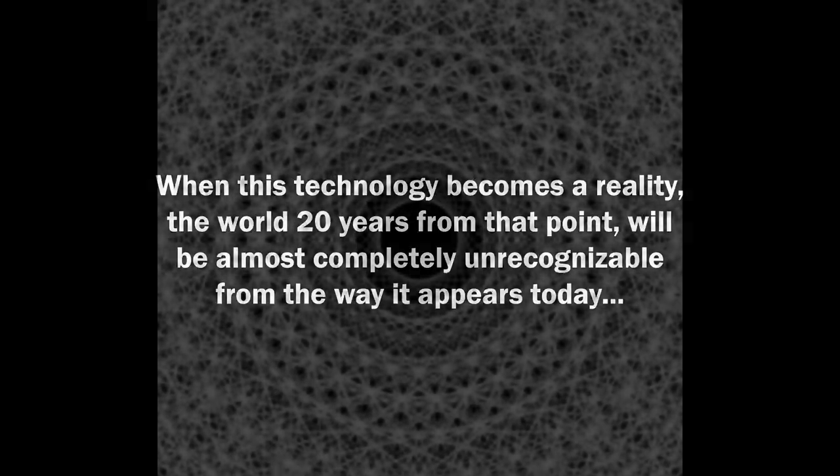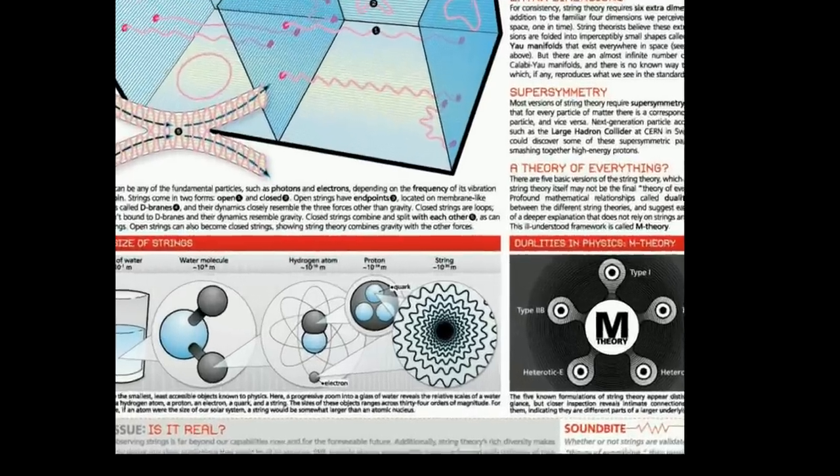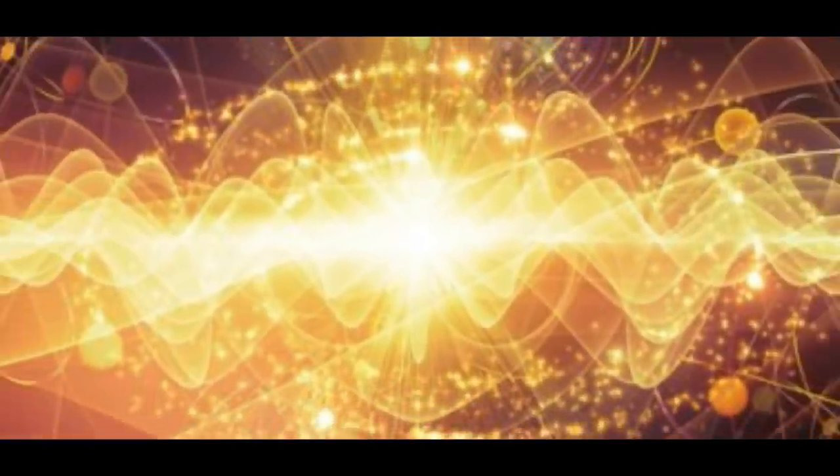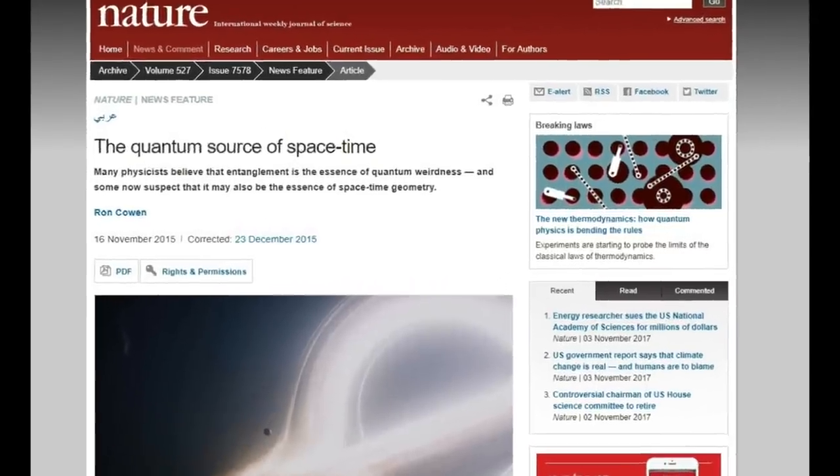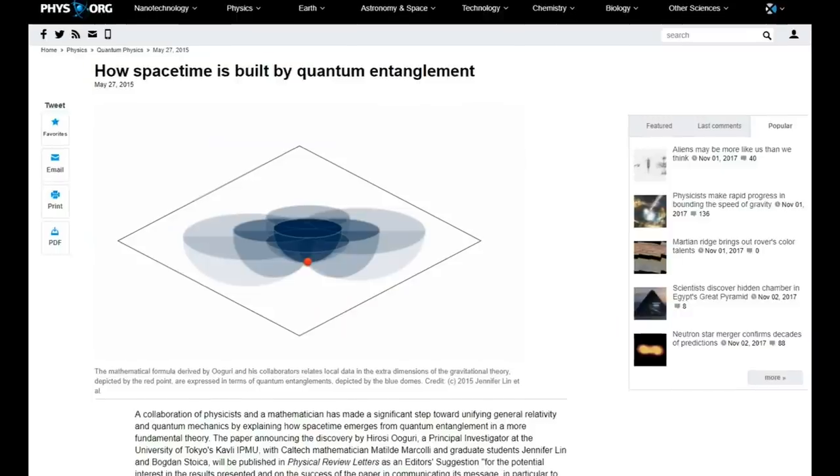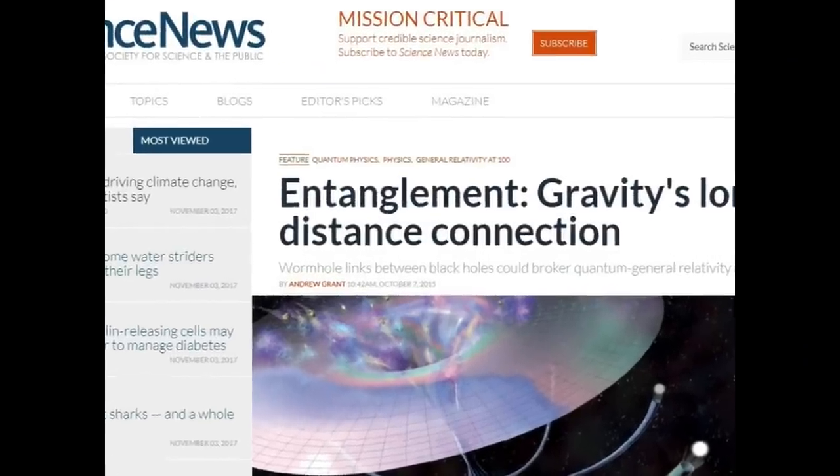Right now in mainstream physics there is a massive revolution about to take place. An exodus away from 40 years of wasted energy on string theory and other failed theories like loop quantum gravity towards the realization that quantum entanglement somehow holds the key secret to quantum gravity. The physics community is about to discover how gravity really works on both a quantum and a cosmological level.